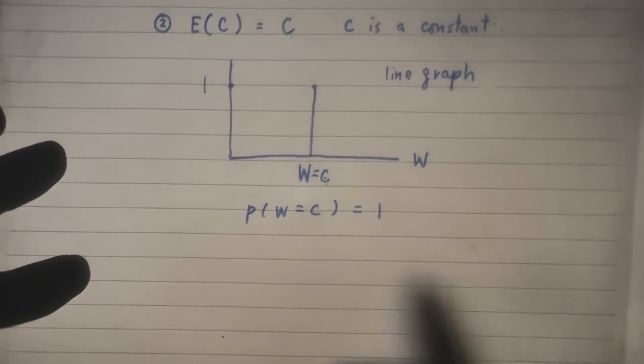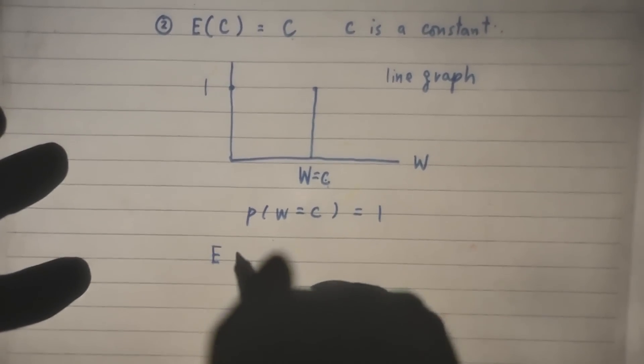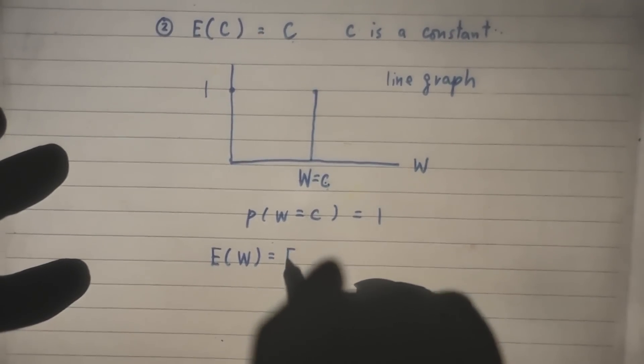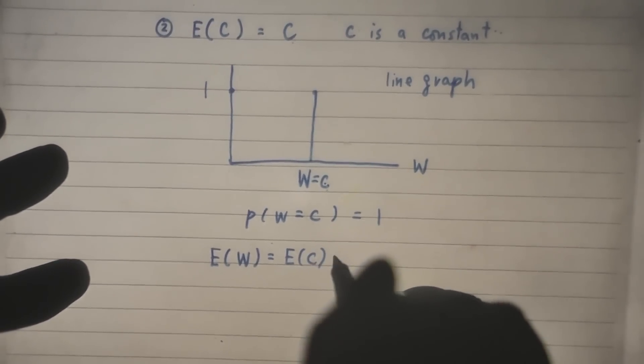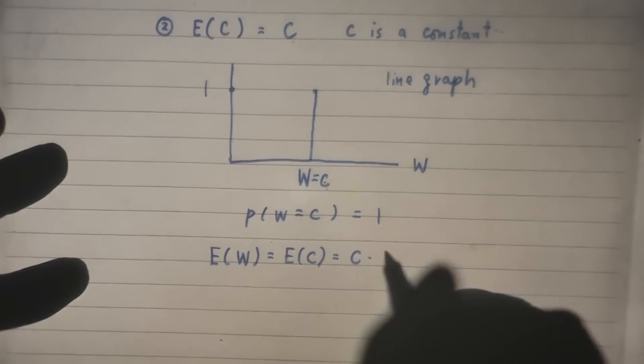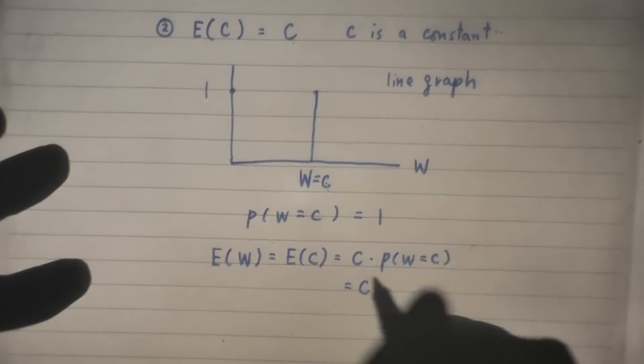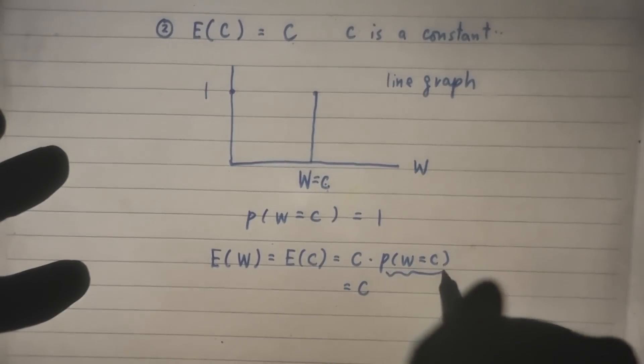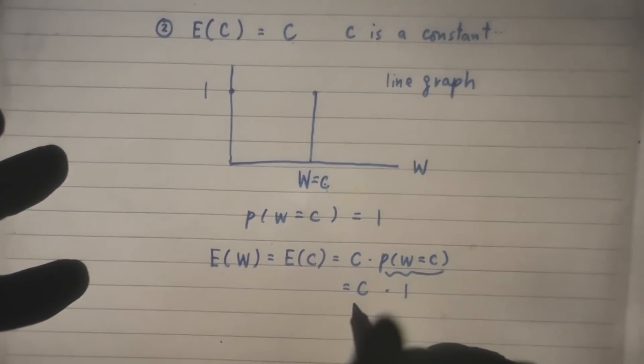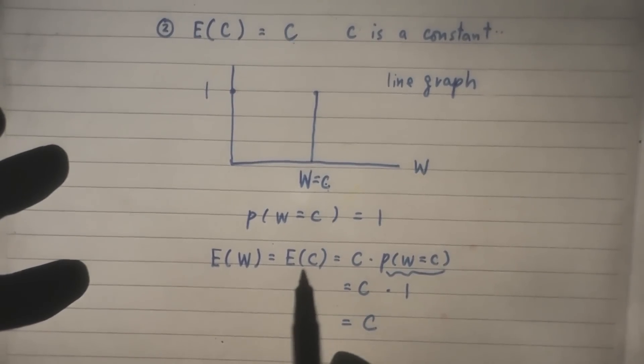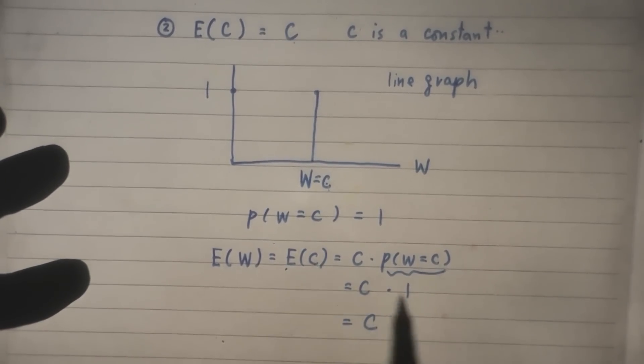So, let's apply our formula. Expected value of W is expected value of C. And what is that? That is C times probability that W equal to C. But W equal to C, the chance is 100%. So, C times 1 is what? Is C. So, EC, expected value of a constant, is a constant itself.